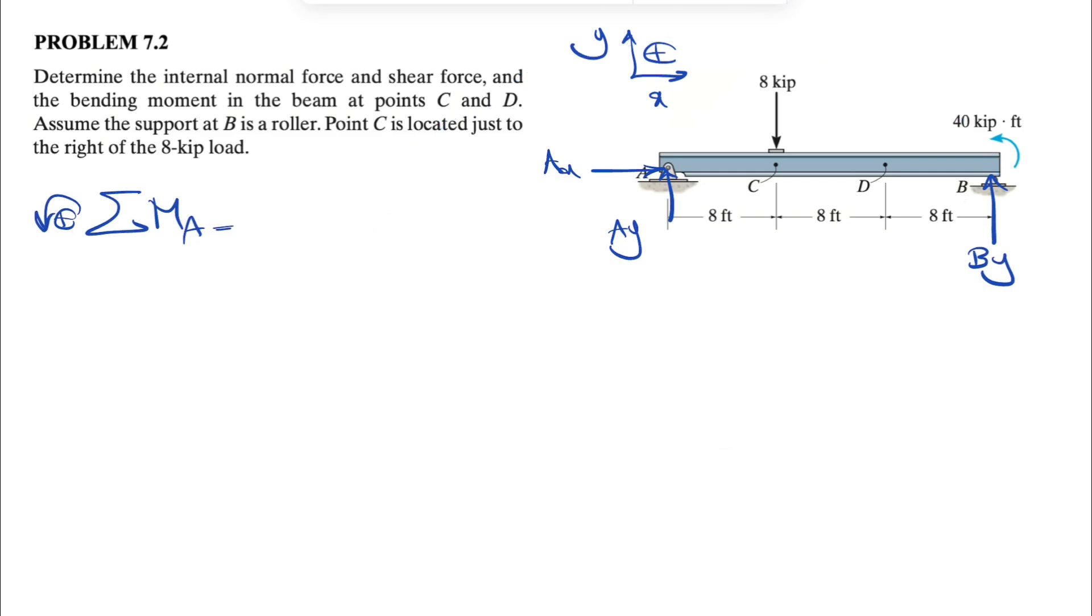Positive By times the distance from A to B, which is 8 times 3, or 24. We have the 40 kip foot counterclockwise, so plus 40. And we have the moment of 8 kip. This one's clockwise, so we have a negative sign for this one, 8 times the distance from the line of action of the force, which is 8, equals 0.